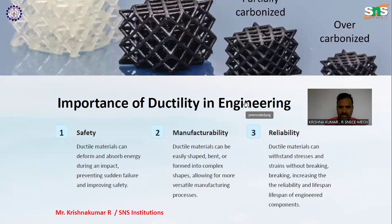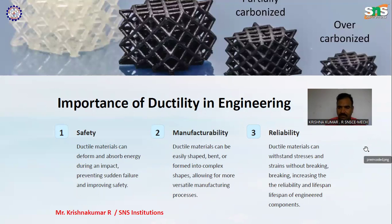Manufacturability: ductile materials can be easily shaped, bent, or formed into complex shapes, allowing for more versatile manufacturing processes. Reliability: ductile materials can withstand stresses and strain without breaking, increasing the flexibility and lifespan of engineering components.